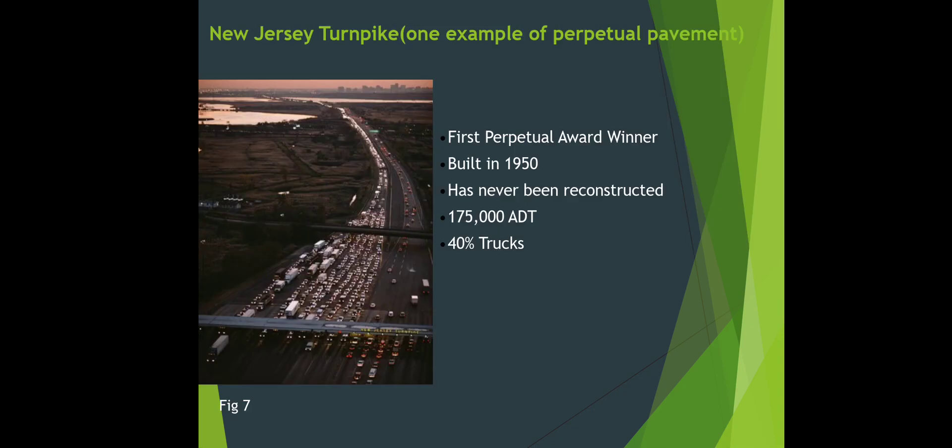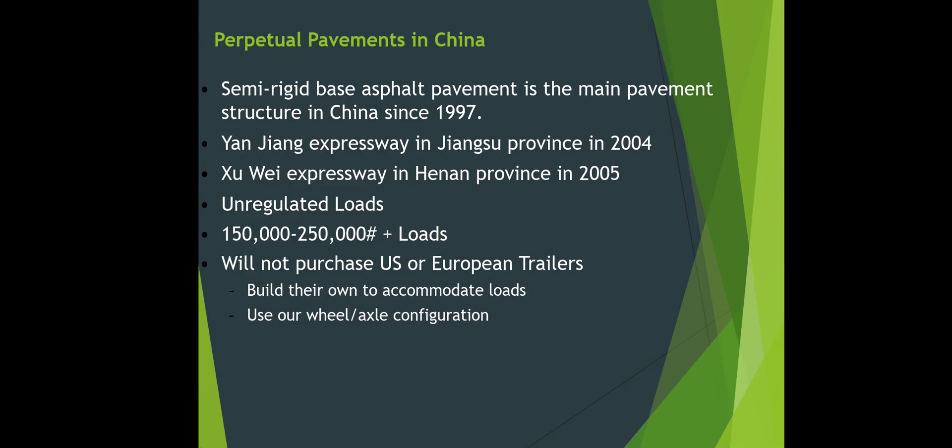The New Jersey Turnpike is one example of perpetual pavement — the first perpetual pavement award winner, built in 1950, has never been reconstructed. Perpetual pavement in China: semi-rigid base asphalt pavement is the main pavement structure in China since 1997, including the Yanjiang Expressway in Jiangsu Province in 2004 and the Zubi Expressway in Hunan Province in 2005.